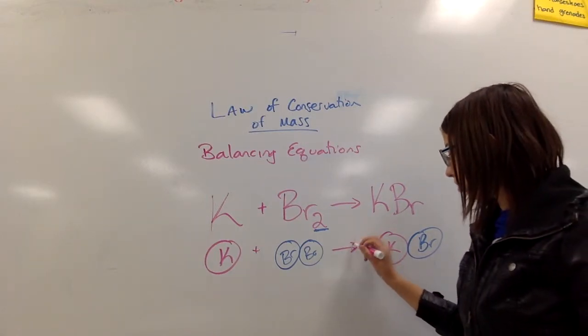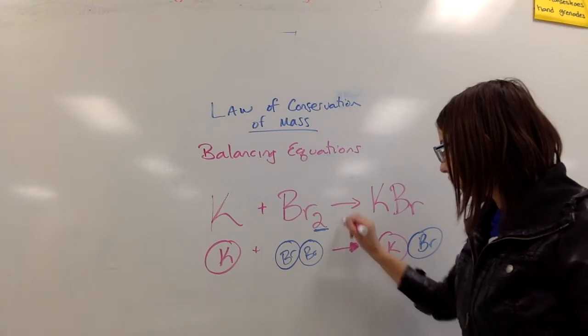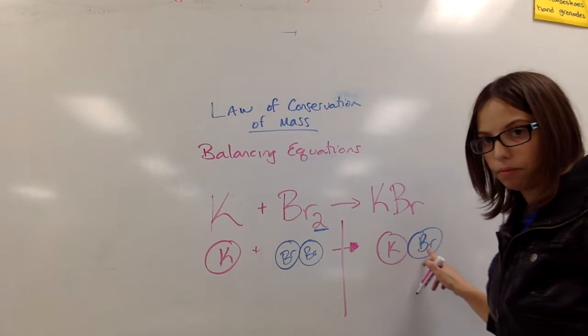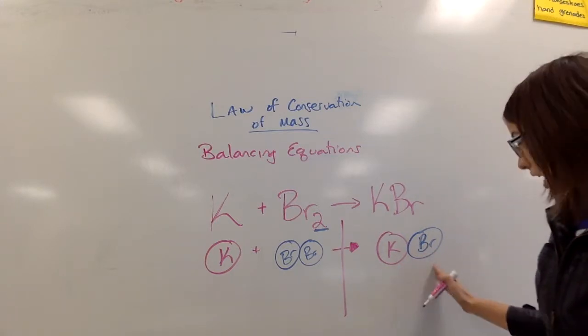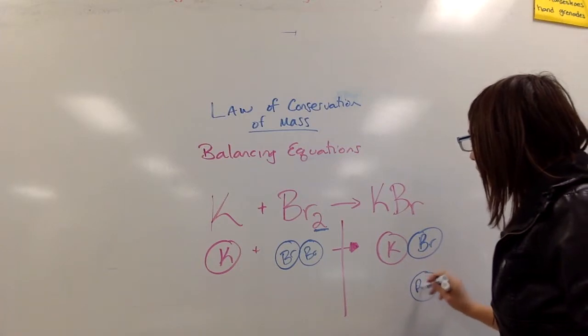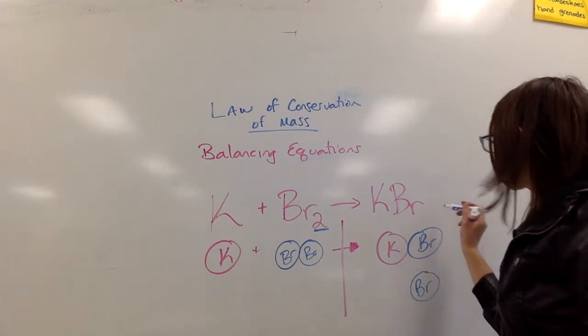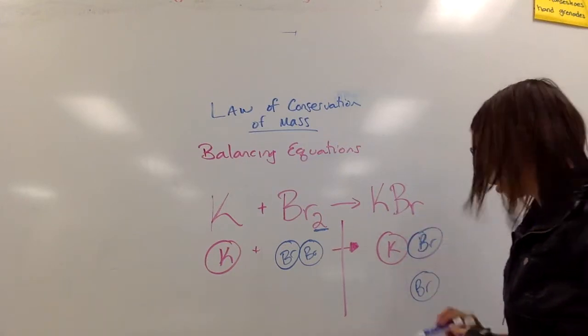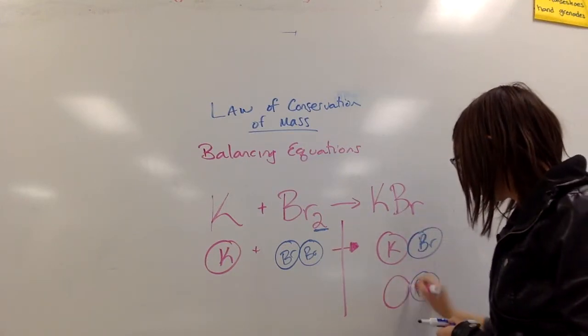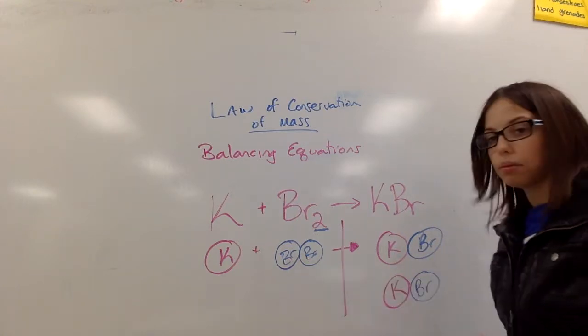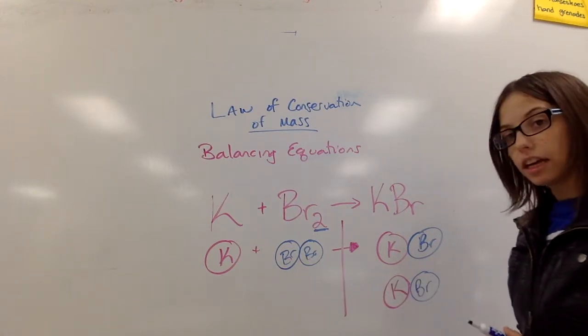I have two bromines over here and only one over here. So that's a problem. So I would need to add another picture of bromine. Again, I can't just add bromine just by itself because there's no single bromine over here. I have to follow a tier. So I draw another picture that matches what I already have. So now I have two bromines and two bromines. So that's all fine and dandy.